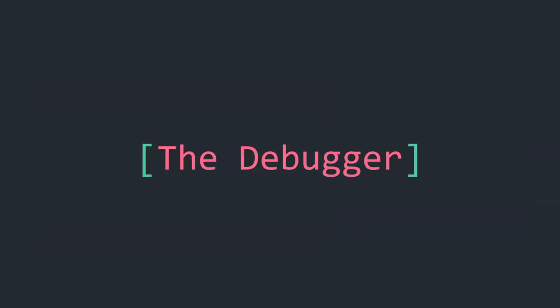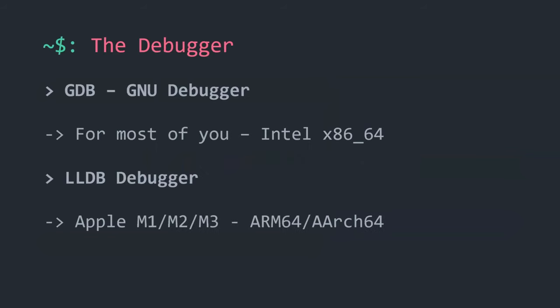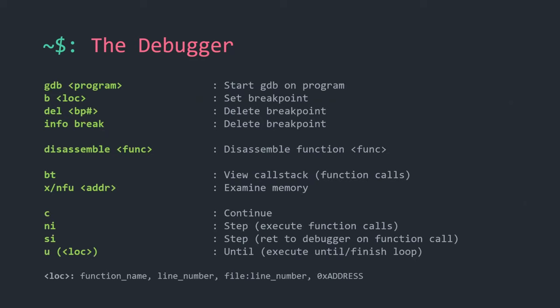For today's talk we'll be covering GDB and LLDB. GDB stands for the GNU Debugger. Those using Apple M1, M2, or M3 chips are on ARM64 architecture and will use LLDB, which is mostly the same as GDB — actually slightly better because it comes with extra features and quality-of-life improvements. You don't need to memorize these commands; you have the slides. These are the most important ones, though not all of them.